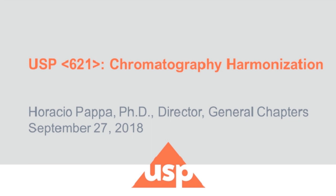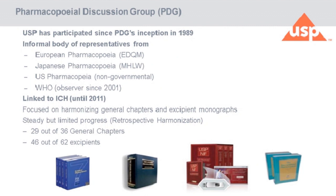We will continue the presentation and talk about the harmonization process of Chapter 621. The Pharmacopoeial Discussion Group, or PDG, was created in 1989, prior to the existence of ICH. The participants are the European Pharmacopoeia, the Japanese Pharmacopoeia, the USP, and the WHO as an observer. WHO maintains the International Pharmacopoeia. It has been linked to ICH since 2011. The group is focused mostly on the harmonization of general chapters across the three pharmacopoeias and excipient monographs.